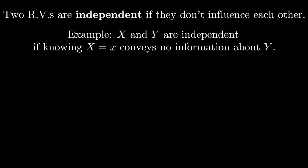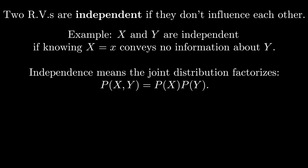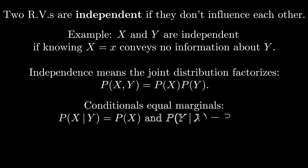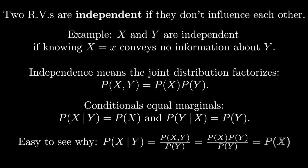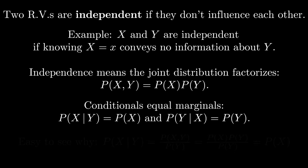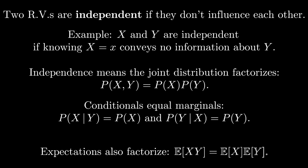Intuitively, independence between random variables is the idea that the two random variables don't influence each other. That is, if I had information about one, it really wouldn't tell me anything about the other. Formally, what that means is that the joint distribution over the two random variables factorizes into two pieces. Each of the two pieces is just a distribution over one of the variables. This also implies that the two conditional distributions are equal to their marginals. Independence also means that the expectation of the product of the two random variables is equal to the product of the expectations.